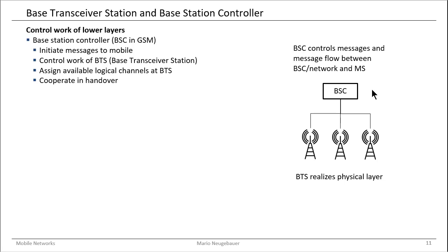Similar things happen when the mobile station is addressed from an incoming call — from outside the network or from a different mobile user inside the network. The paging information first comes from the mobile switching center, which asks the base station controller to page for the mobile station. The mobile station answers if it is in the area of the base transceiver station. The base station controller then knows the mobile station's specific area and takes control by acknowledging the assignment. Finally, the mobile station receives the call, and the mobile switching center routes all traffic via the base station controller to the base transceiver station.